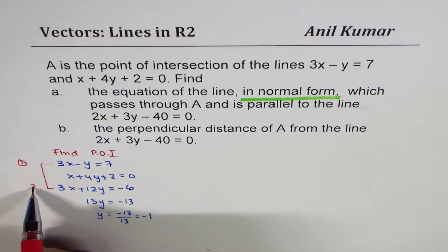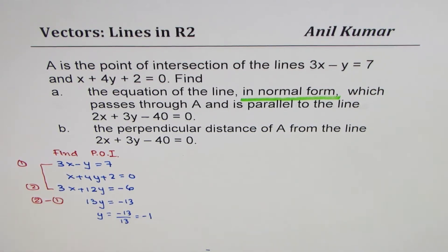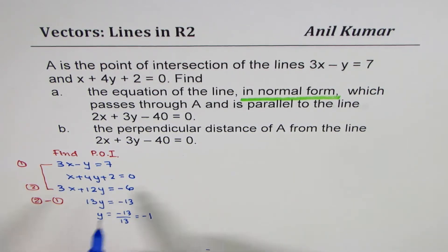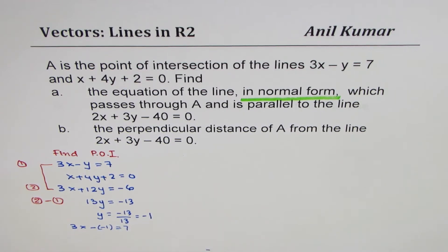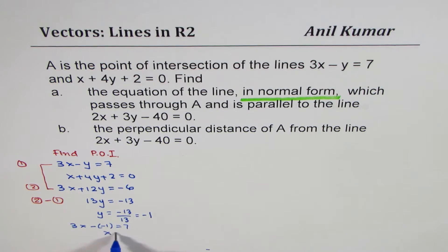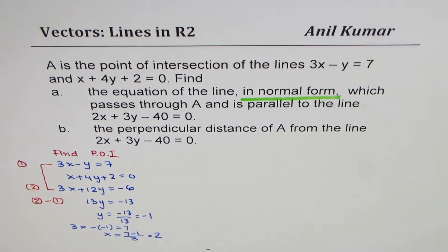This is equation 1 and that is equation 2 — at this step we did equation 2 minus equation 1. Once you get y, you can find x. Substituting y equals negative 1 into the first equation: 3x minus (negative 1) equals 7, which gives 3x equals 7 minus 1, so x equals 6 divided by 3, which is 2. So we have the point of intersection A equals (2, negative 1).